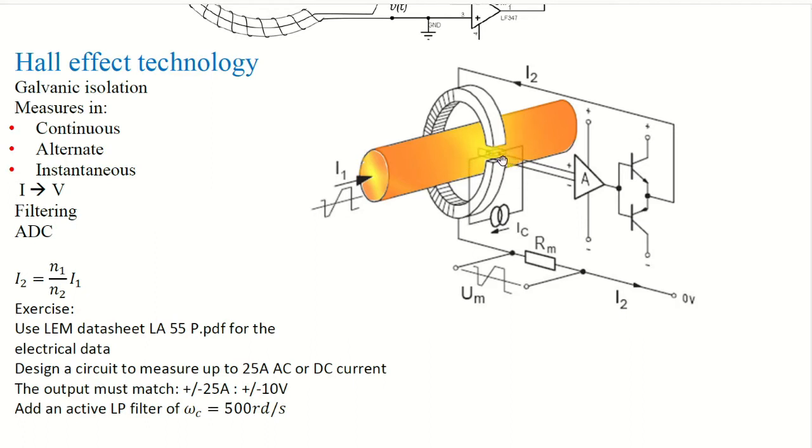And as you have this term N2 by I2 turns plus the N1, here you have N1 equal 1, turn by I1. This will produce a field. And it will be sensed here with a very tiny Hall effect sensor by producing a voltage.